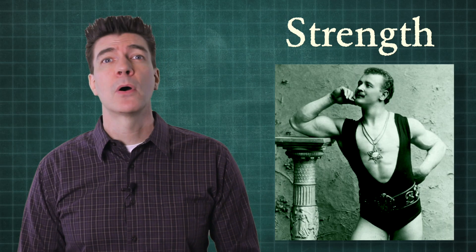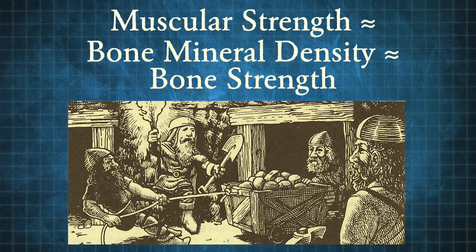Strength is another component of injury resistance. Even when cross-sectional area is held constant, the stronger someone is, the more resistant they will be to injury. Bone mineral density is directly proportional to muscular strength, so strong muscles mean strong bones that are harder to break. Strength is also beneficial because fibrous muscle tissue is tougher than fat — it acts as body armor that helps keep penetrating objects from getting to your vital organs.